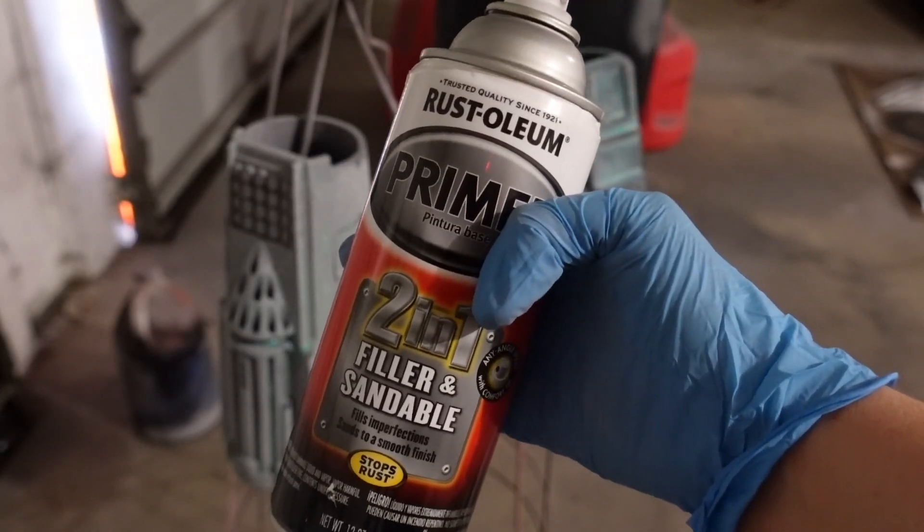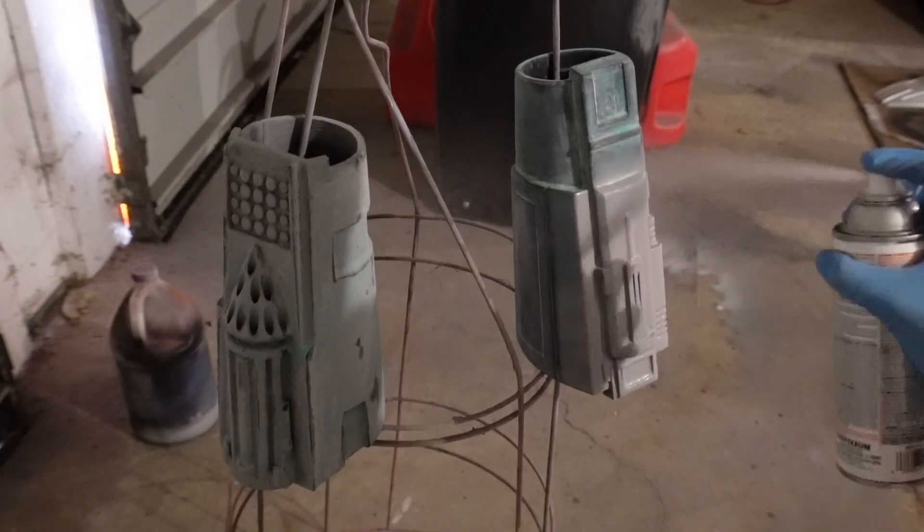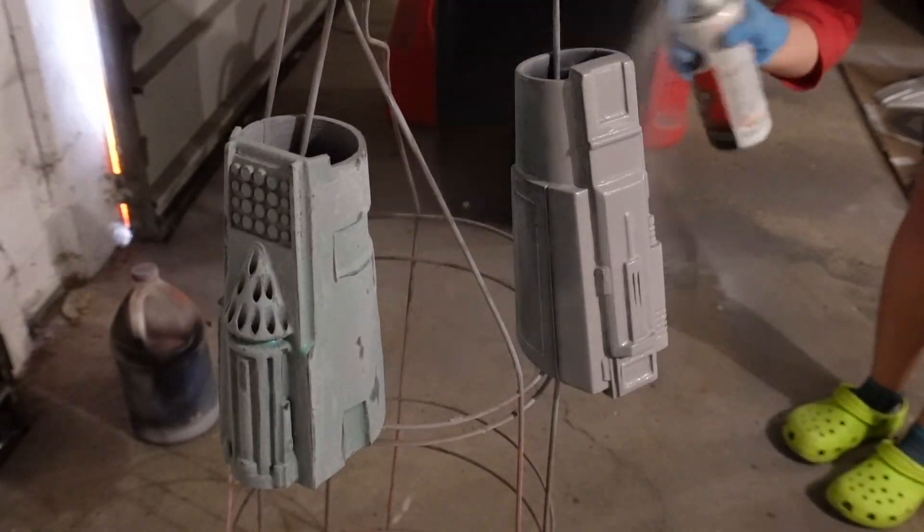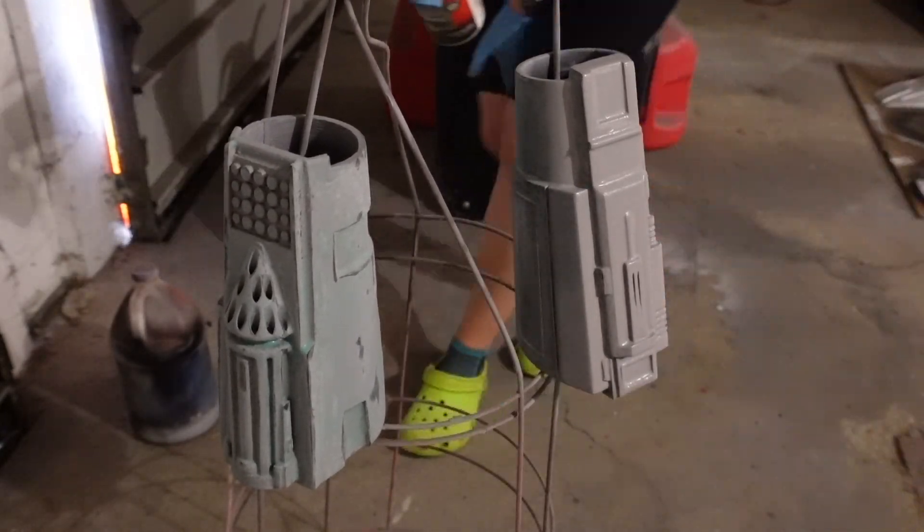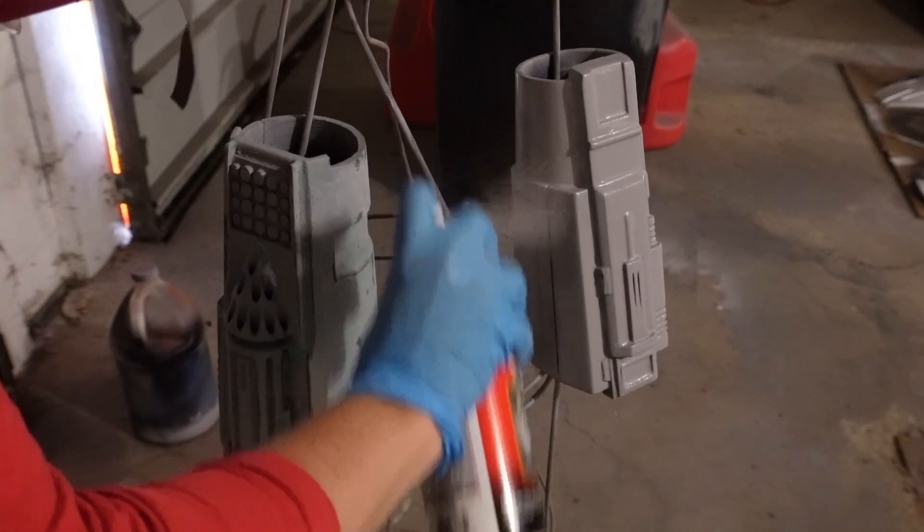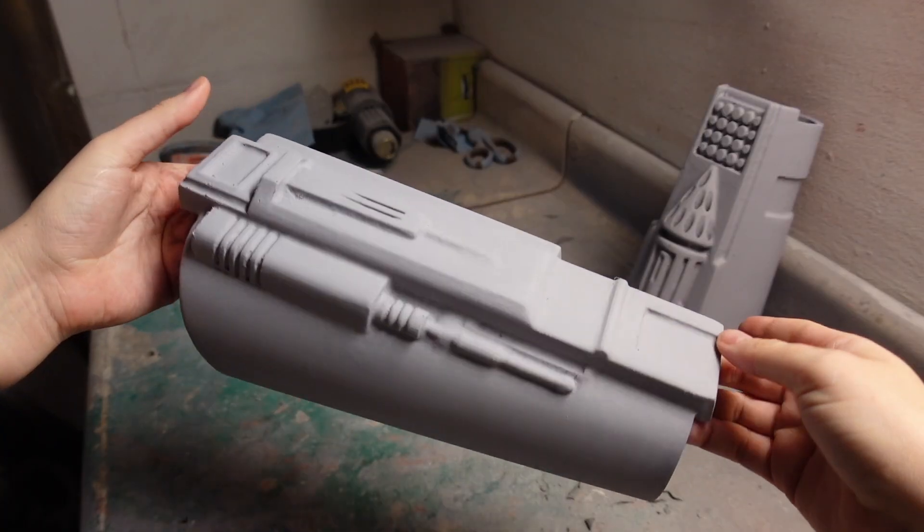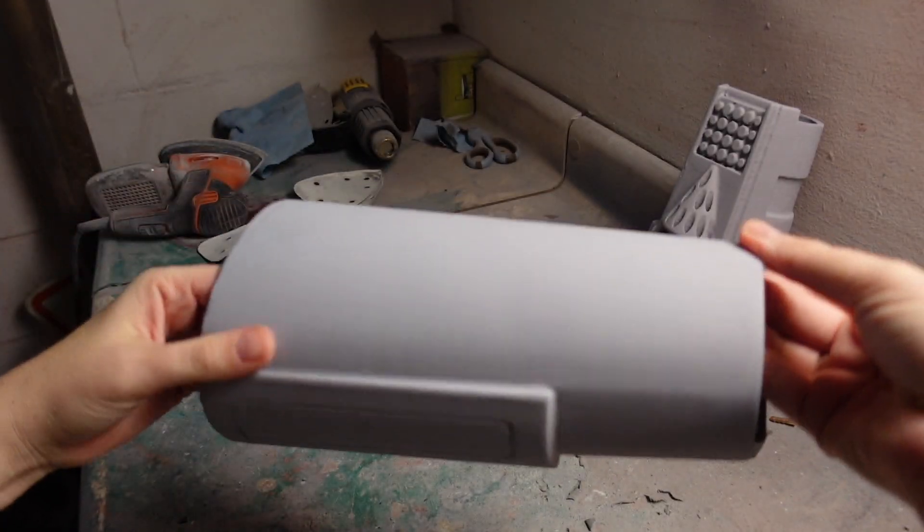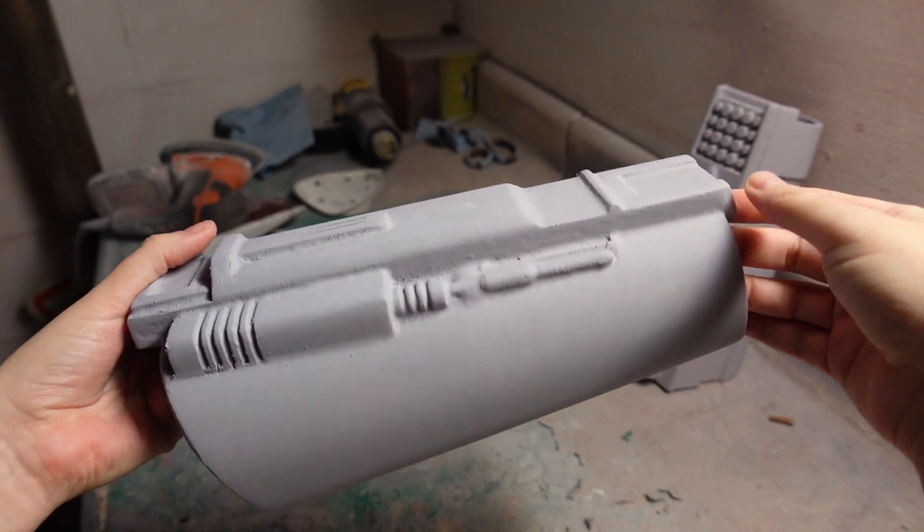After I was happy with the first pass of sanding I gave them both a coat of two-in-one automotive filler primer. Also if you have any leftover tomato cages from a failed garden venture like we do they make some pretty cheap painting racks. I let these gauntlets cure overnight but you could probably get at them with some sandpaper after about an hour if you so desire.